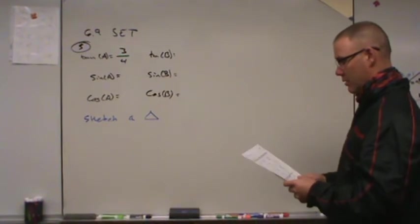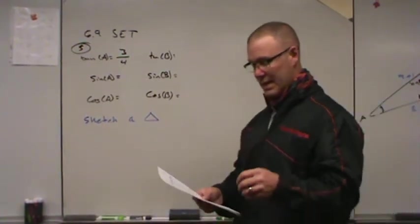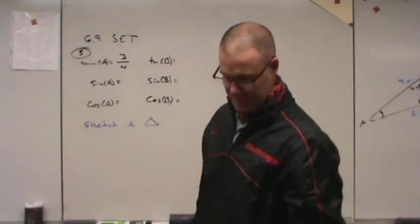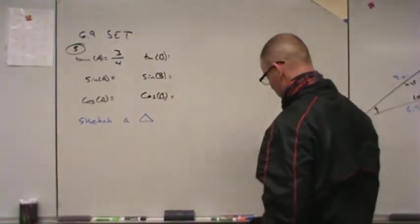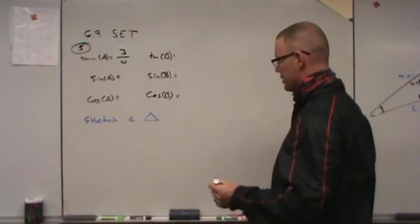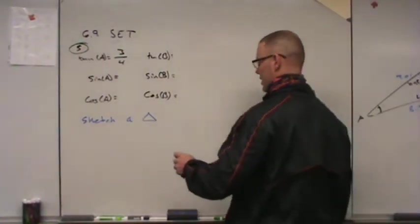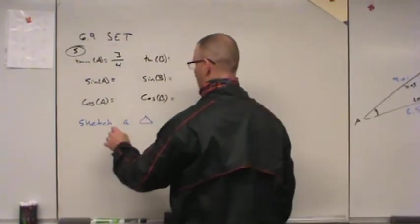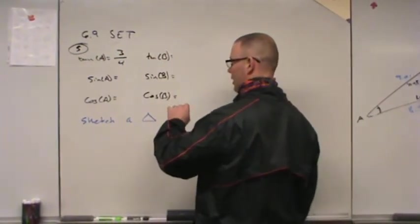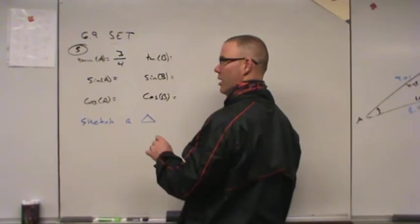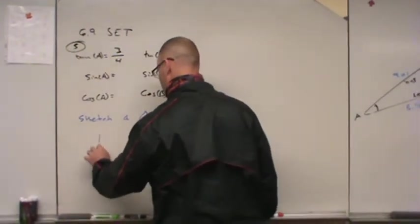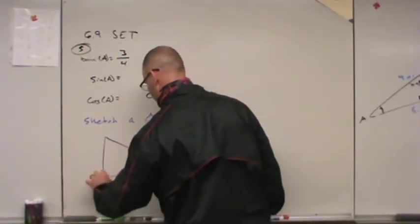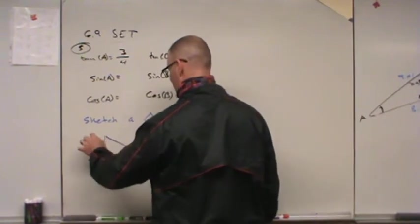And then I went ahead and covered the 6.9 set, that's what we worked on in class today. And when we look at that, the first thing it wants us to do is it wants us to sketch a triangle, and it tells us that A and B are the non-right angle portions. So sketch a triangle, a right triangle, and label it A and B.